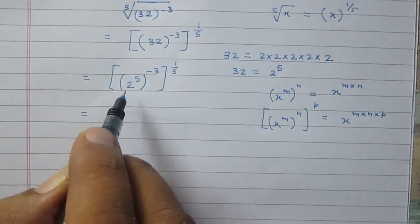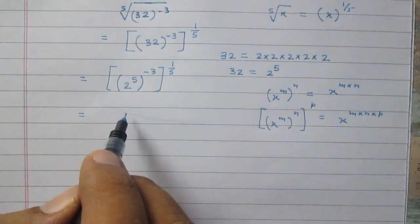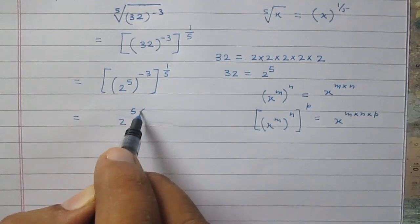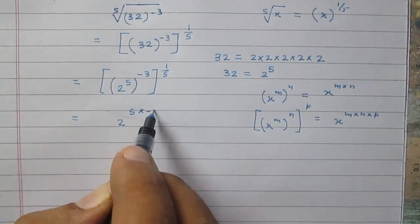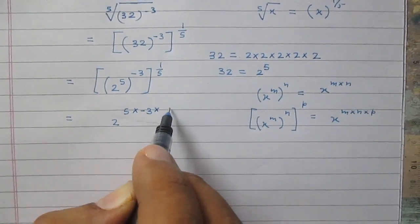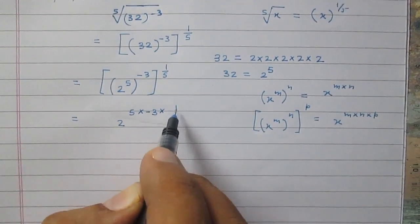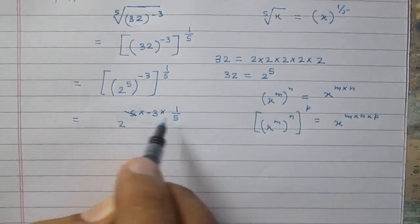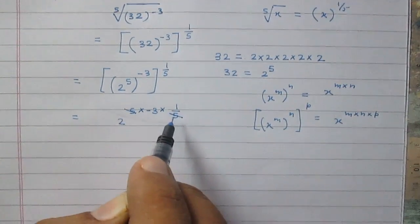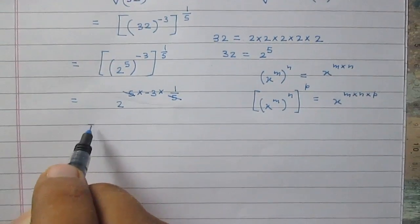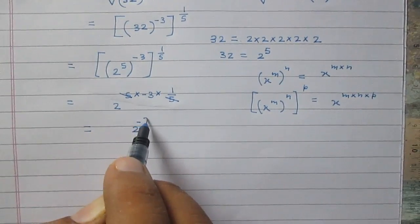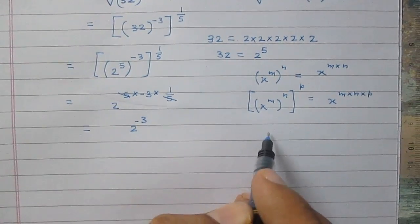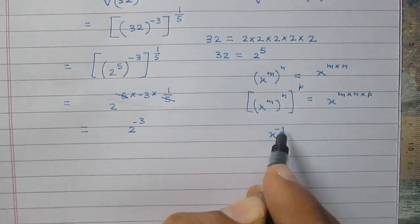Using this rule, we can write this term as 2 raised to the power 5 multiplied by minus 3, multiplied by 1 upon 5. This can be simplified and finally we get 2 raised to the power minus 3.